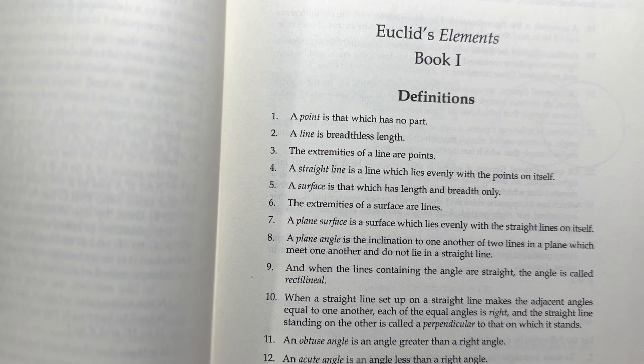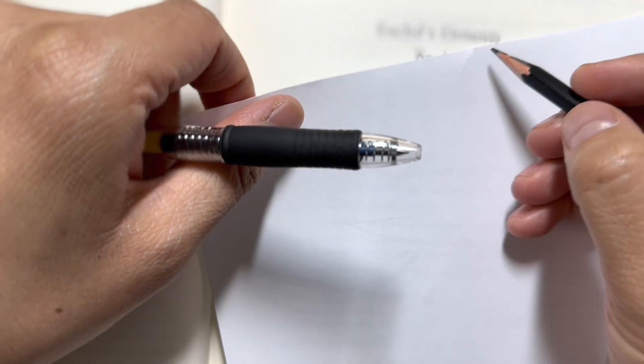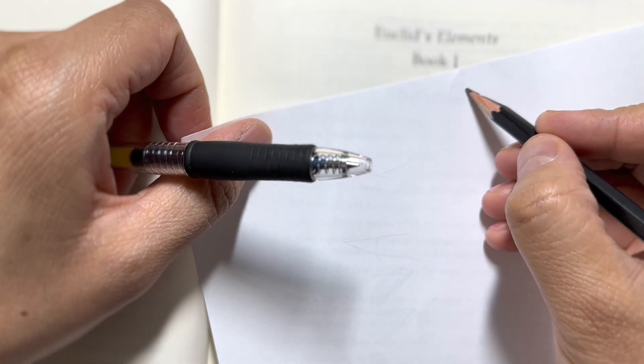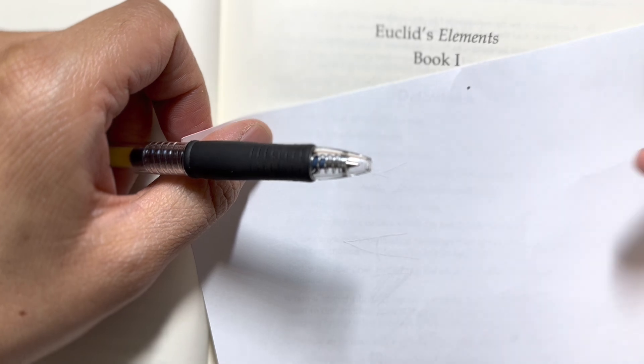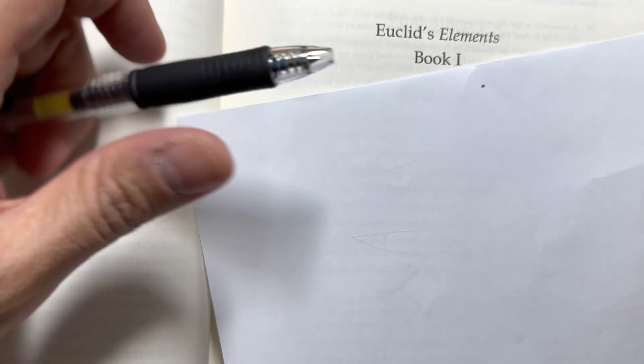A point is that which has no part. Essentially it has no width and no length. So a point is just a point - no width, no length, no height.